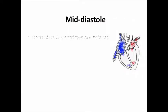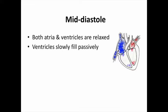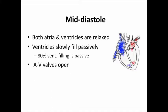Starting with the mid-diastolic period: here, both the atria and the ventricles are relaxed, so the AV valves are open. The AV valves are almost always open — the only time they close is when the ventricles are contracting. When the AV valves are open, blood passively fills the ventricles. About 80% of ventricular filling is passive, meaning blood just drains from top to bottom through those open AV valves.